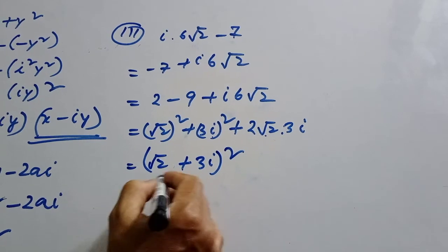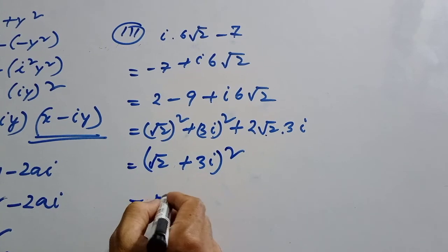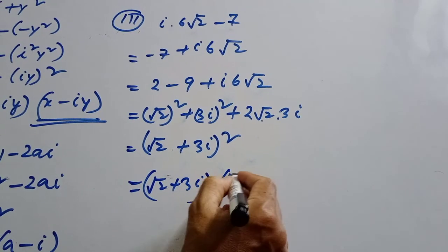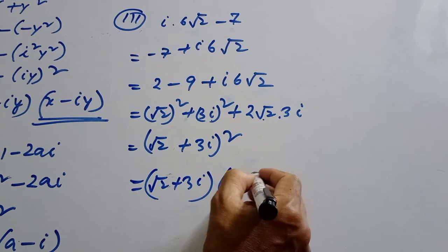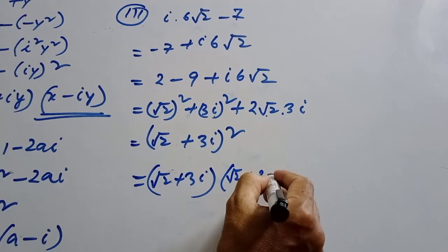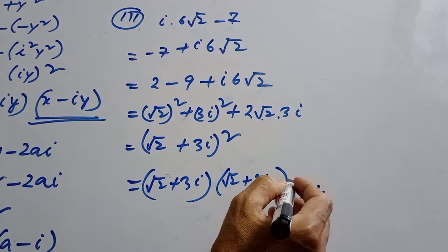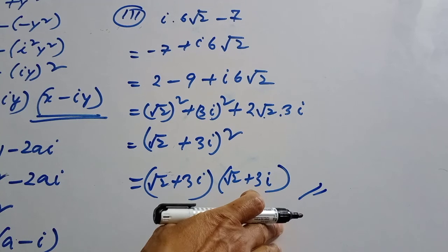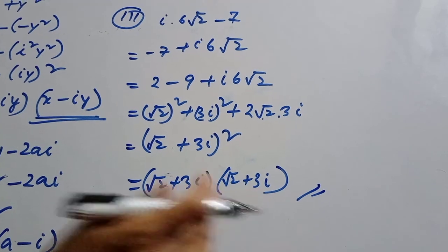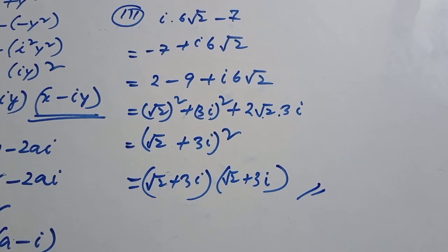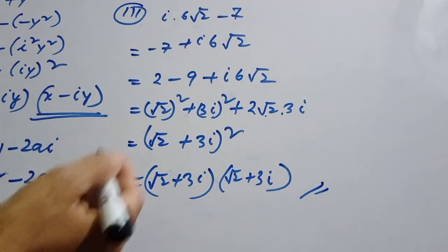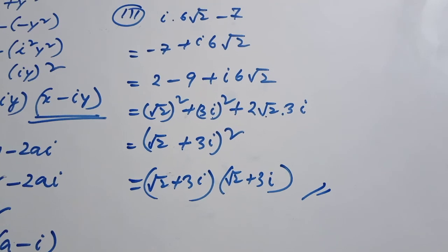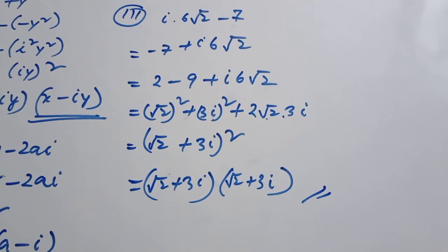This square is a double square. This is the whole square. This is the whole square. Next, chapter 2 is the whole square.